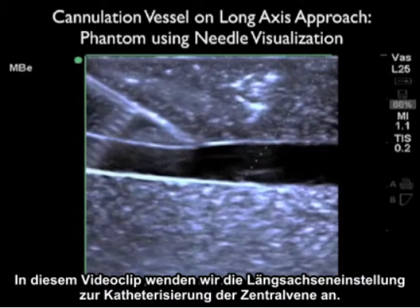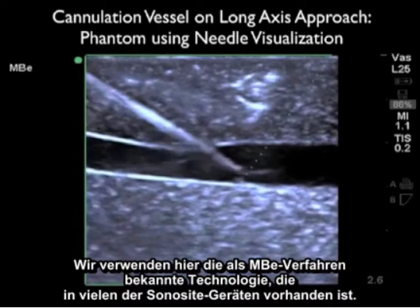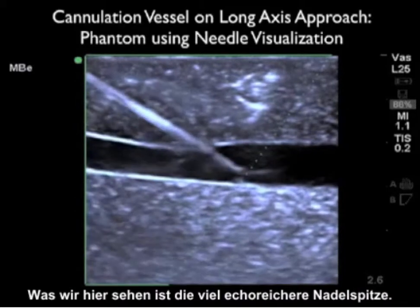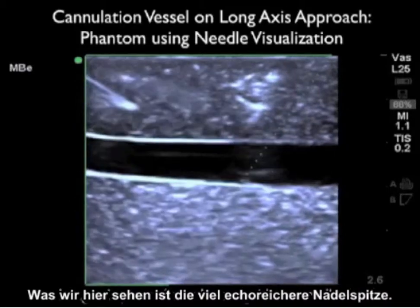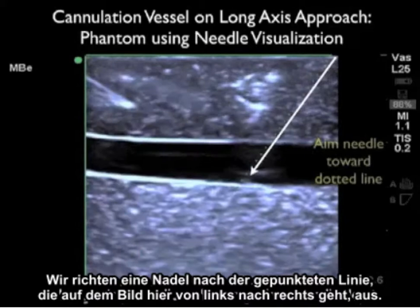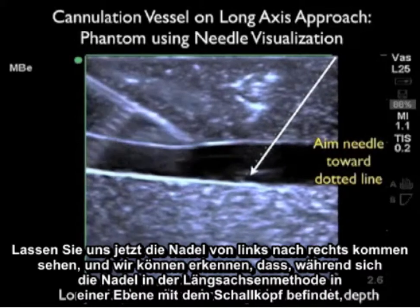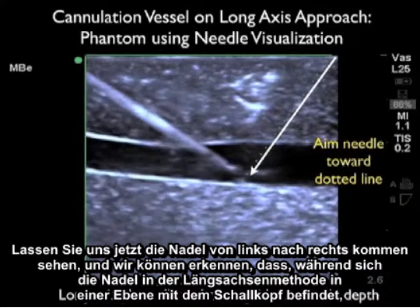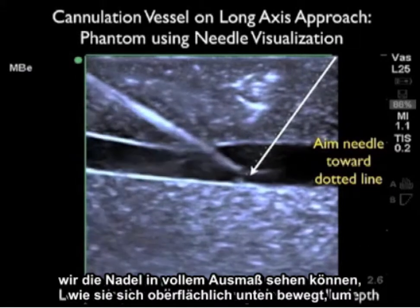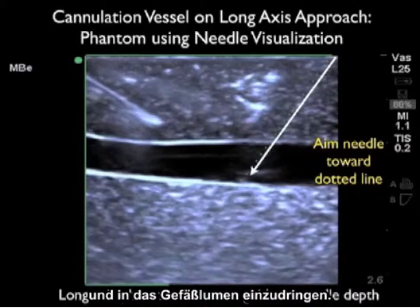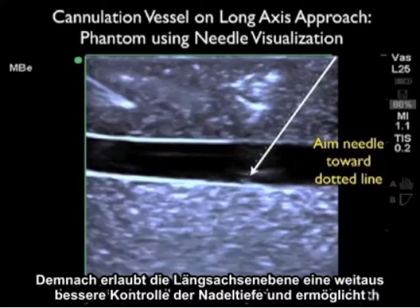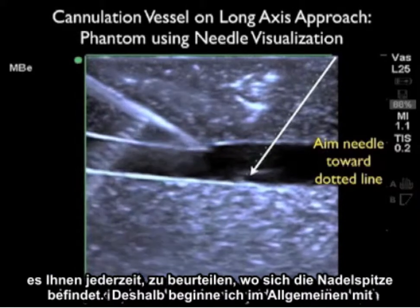In this video clip we use the long axis approach for cannulation of a central vein, employing MBE technology available on many sonosite machines, which makes the needle tip much more echogenic. The needle is aimed towards the dotted line on the image. Watching the needle come in-plane with the probe from left to right in long axis, we can see the full extent of the needle as it travels from superficial down to permeate the anterior wall and enter the vessel lumen. The long axis plane allows much better assessment of needle depth and lets you gauge the tip position at all times.